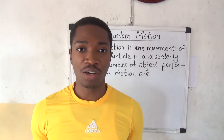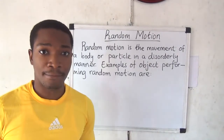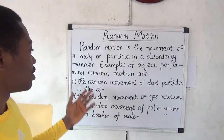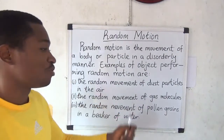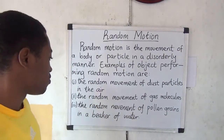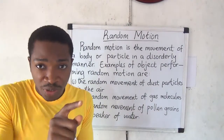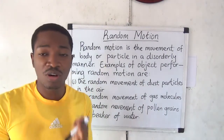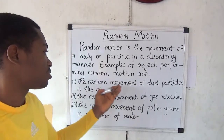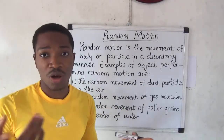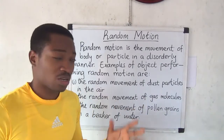The next type is random motion — the movement of a body or particle in a disorderly manner. Examples include the random motion of dust particles in the air, the random movement of gas molecules, and the random movement of pollen grains in a beaker of water. Pollen grains placed in water move in a disorderly manner with no particular direction or pattern, just as dust particles are carried randomly by air molecules.